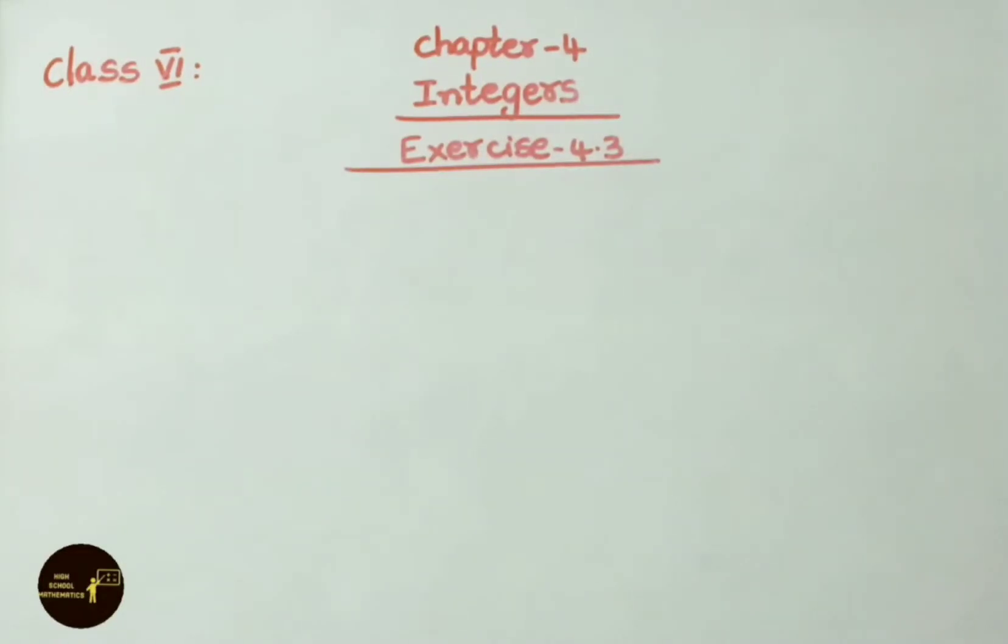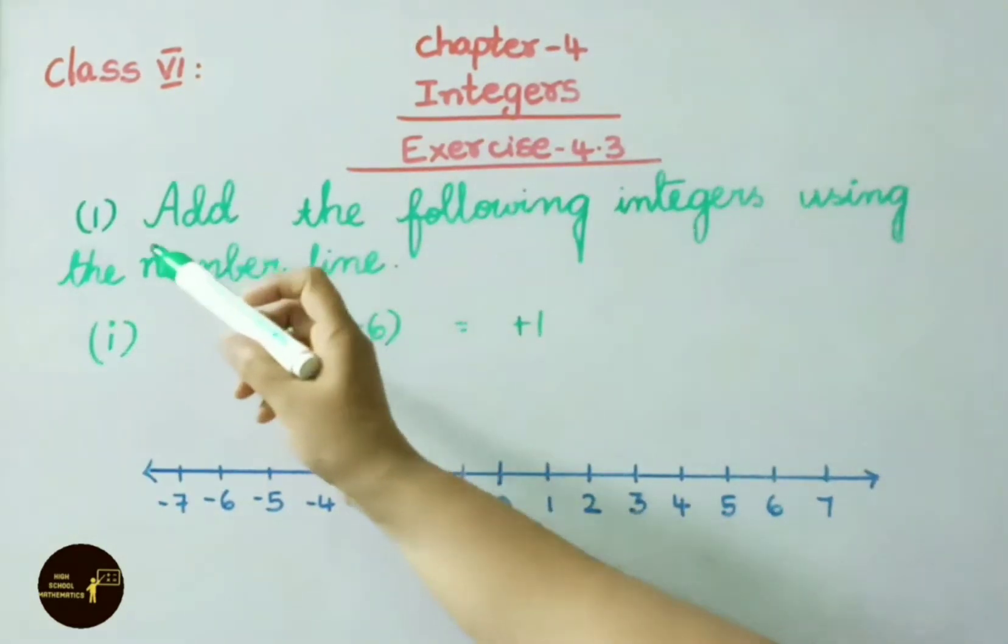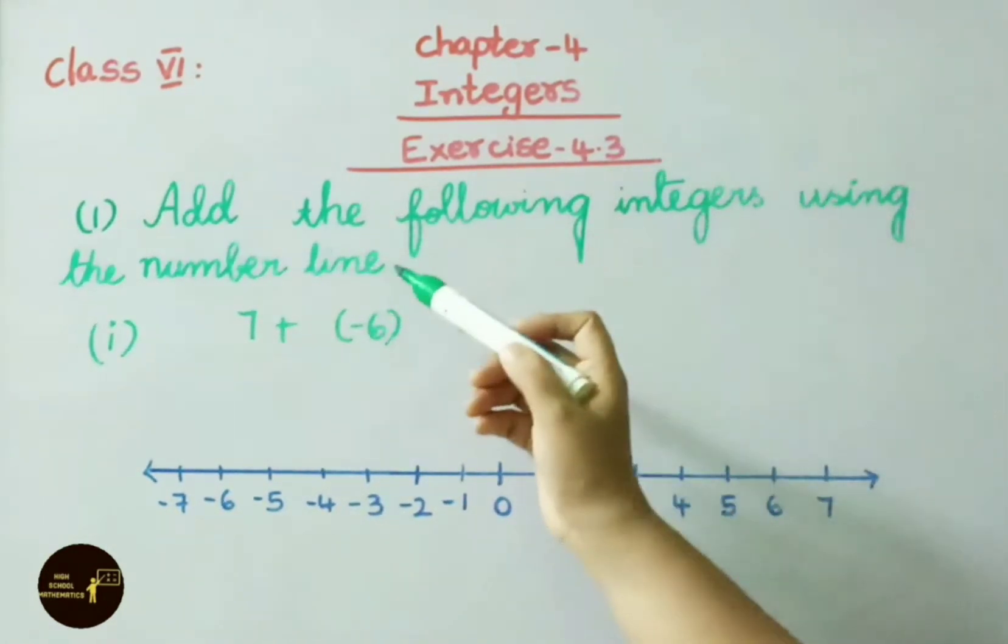Hello everyone, welcome to High School Mathematics Channel. Today we are going to learn Class 6 Chapter 4 Integers Exercise 4.3. See the first question now. Add the following integers using the number line.